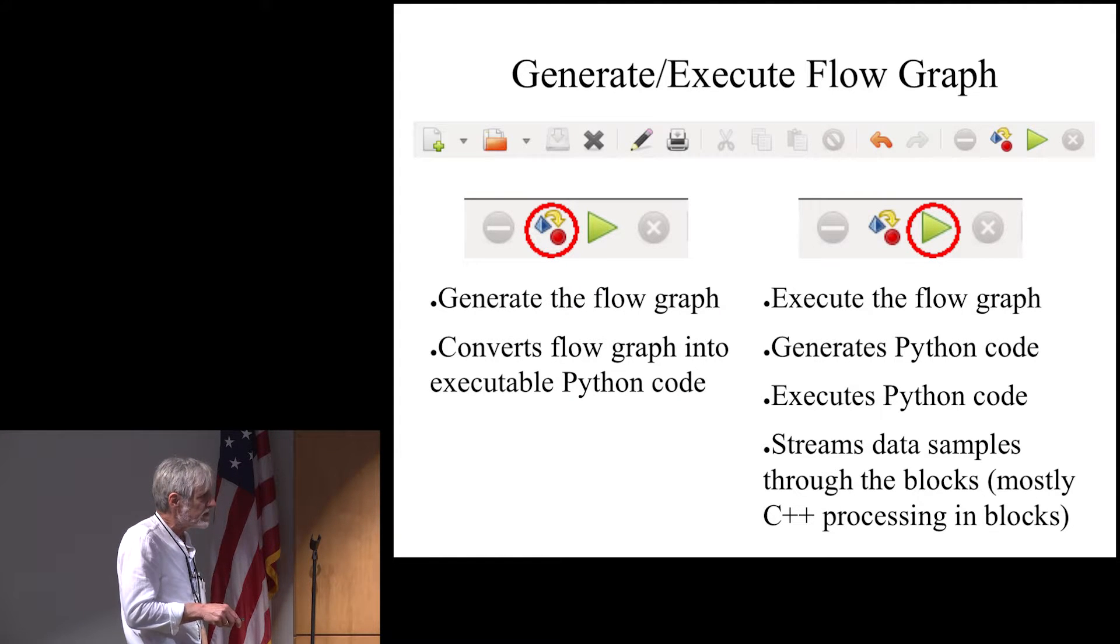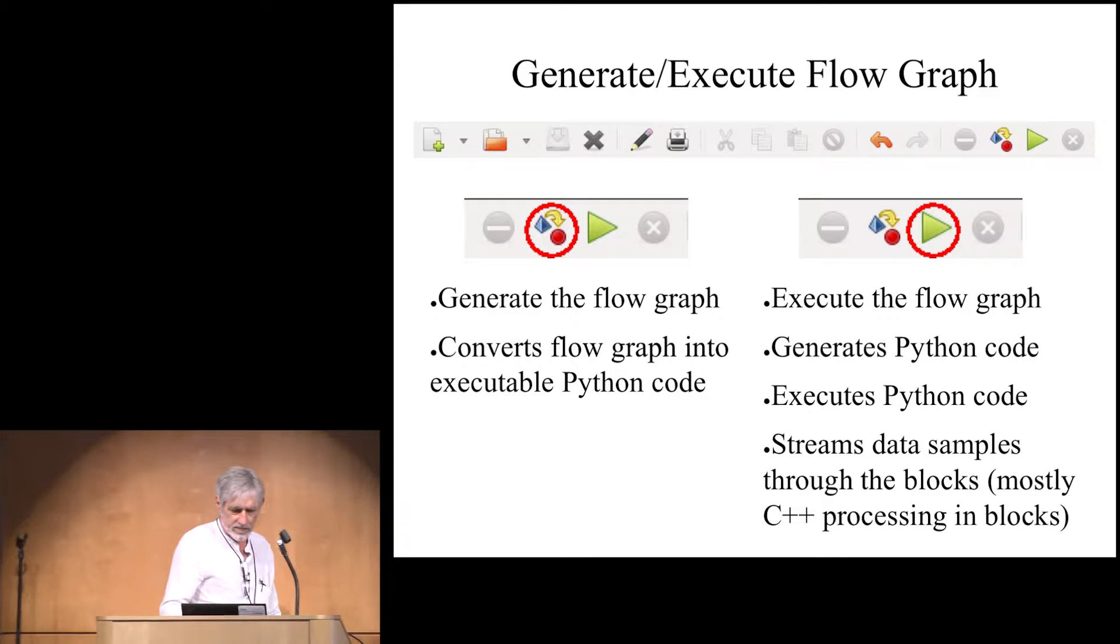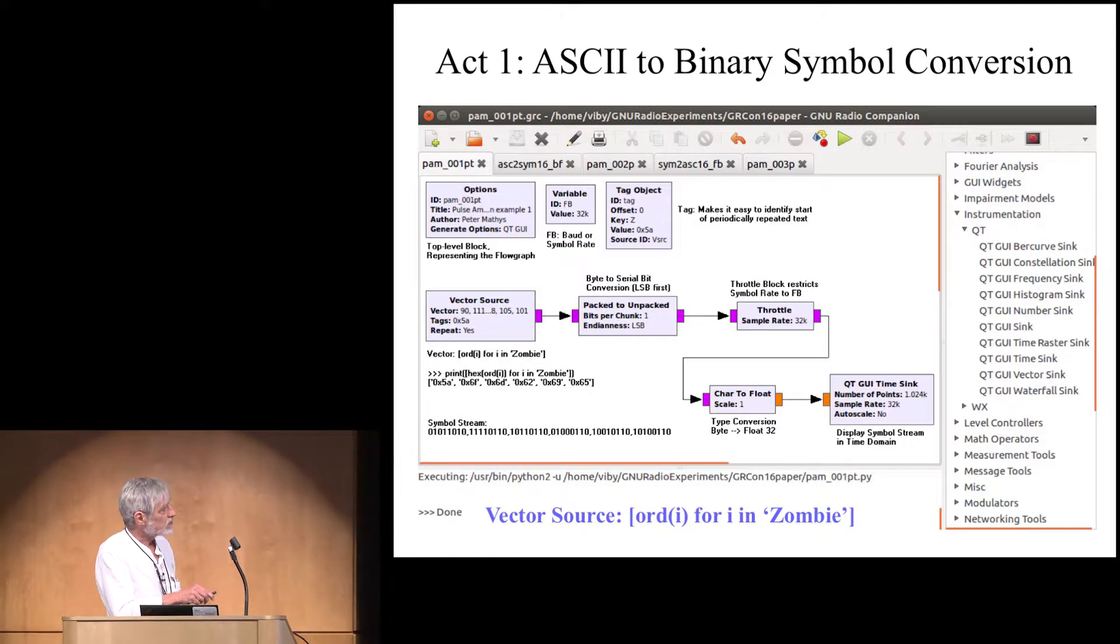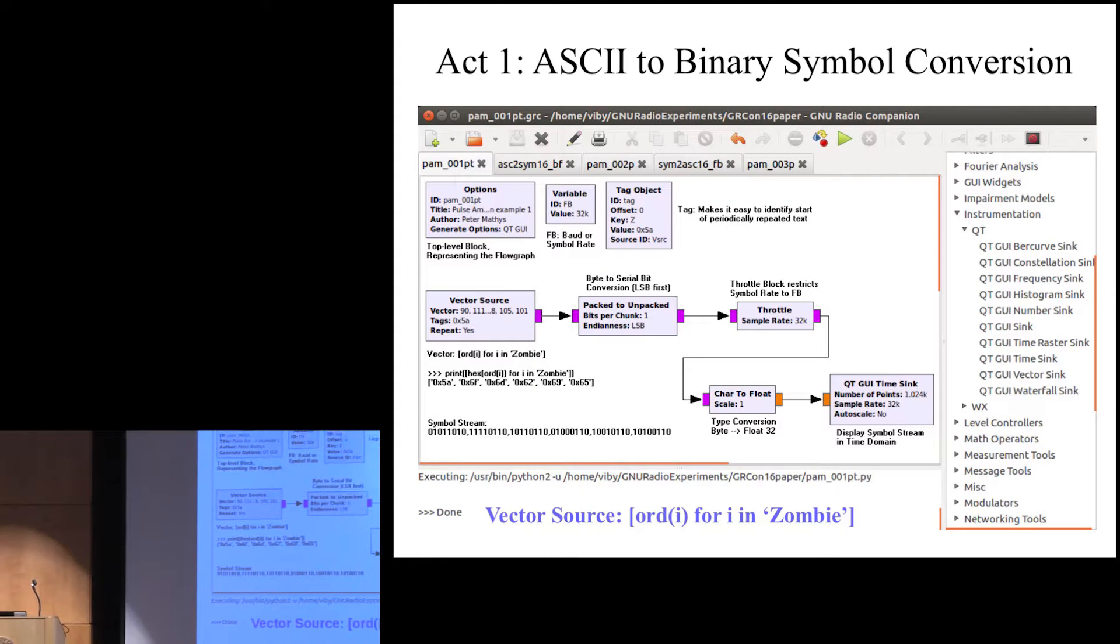There is a little thing here. This is a tag. That's a very handy thing that you can do in the original flow graph here. The tag is actually made here. And then it's inserted in the vector source. The vector source is producing the text periodically. So it repeats it over and over again.